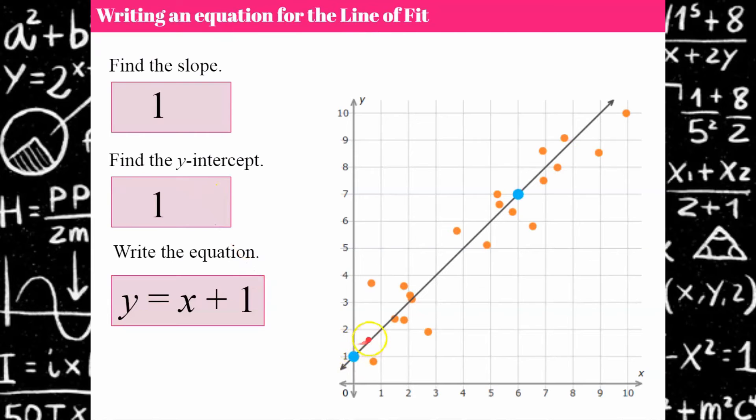Then identify the y-intercept, the line clearly passes through the y-axis at one. So y equals a slope, remember that's an invisible one, that's another video I have in my channel for you, so you won't see me write the one but there is a one right there. So our slope is one and our y-intercept, y equals x plus one.